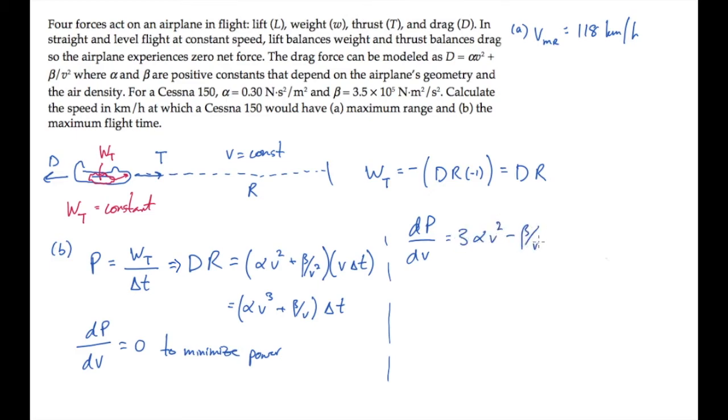which we can then solve for the speed required for maximum time, V sub mT. It works out to this, which we can notice is just one-third to the one-quarter power times the value that we got in part A. Substituting those values and calculating, we find the maximum time of flight is achieved with a speed of 89 kilometers per hour.